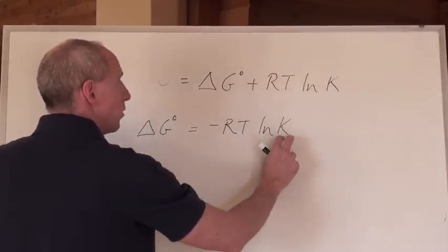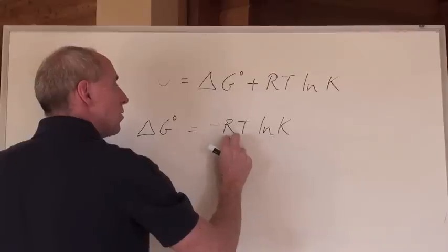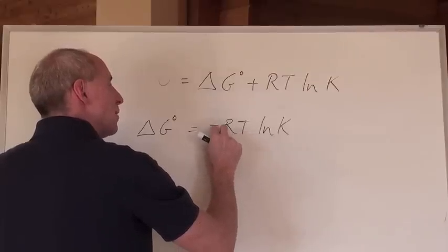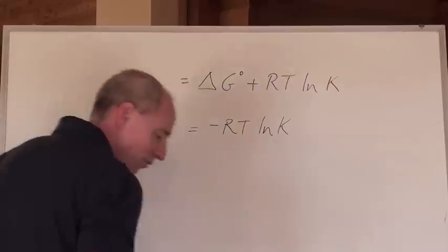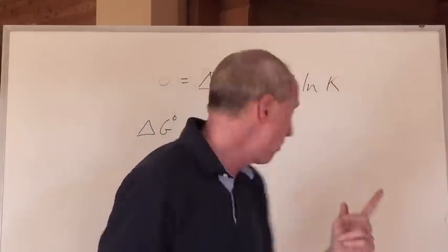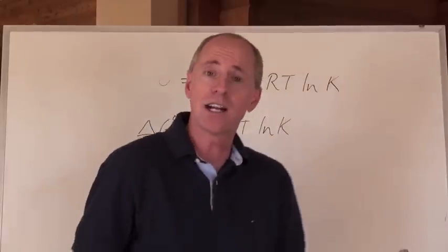The natural log of a number greater than one, times that, and these numbers are always positive - 8.314, and the temperature in Kelvin is positive. But you make it negative, which means the reaction is spontaneous. When a K value is greater than one at that specific temperature, you've got a spontaneous reaction.